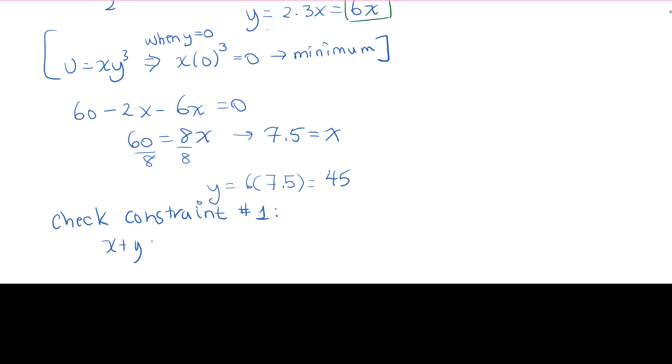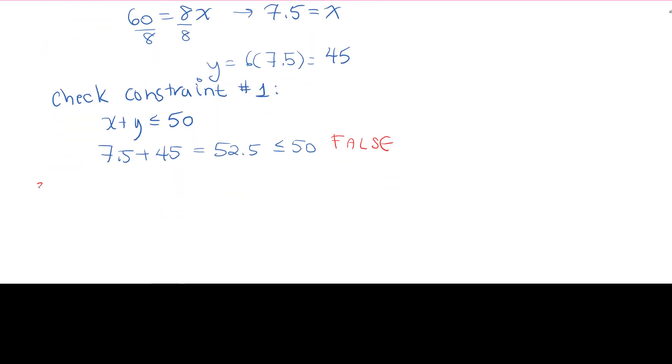So we need to double check that we do indeed spend less than or equal to $50. So 7.5 plus 45 is less than or equal to 50. Is this true or not? Well, it turns out that x plus y ends up adding up to 52 and a half. So it's not less than or equal to 50. What this means is that we now have to move on to what's called step number 3 here.